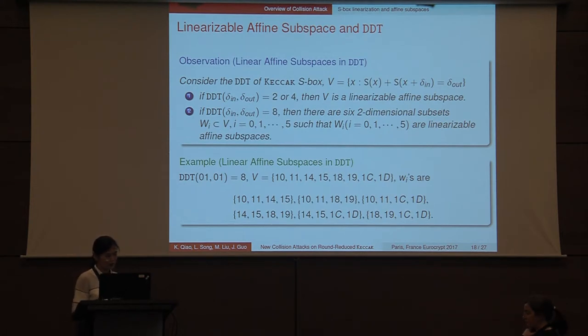We observe that when the DDT value is two or four, then the set satisfying this difference is LAS. However, when the DDT value is eight, it does not allow linearization. Exhaustive search of LASs shows that the largest LAS is of dimension two. However, this three-dimensional set contains six two-dimensional subsets that are LASs. For example, the three-dimensional subspace corresponding to input difference one and output difference one contains these six LASs.